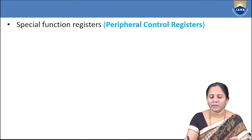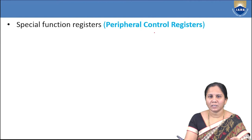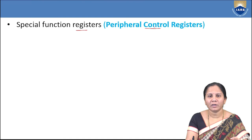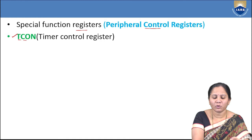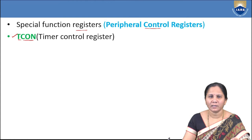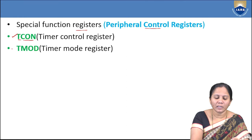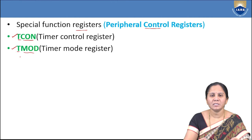To access these timers and counters, we have different special function registers, also called peripheral control registers. The two main ones are the TCON register — where T represents timer and CON represents control, making it the timer control register — and the TMOD register, where T represents timer and MOD represents mode, making it the timer mode register.